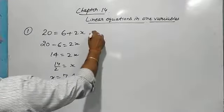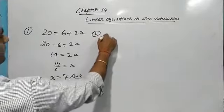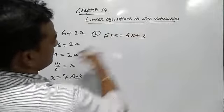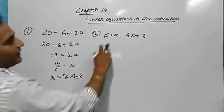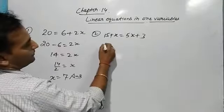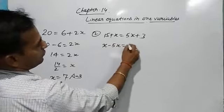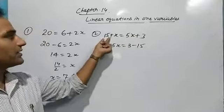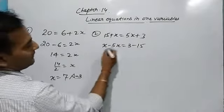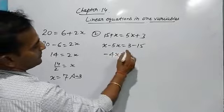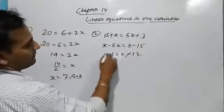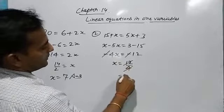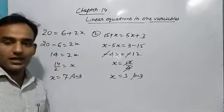Next question from exercise: 15 + x = 5x + 3. Both sides have x, so we rearrange: x − 5x = 3 − 15. This 5x comes to this side and 15 goes to this side. So −4x = −12. The negatives cancel, giving x = 12/4 = 3.